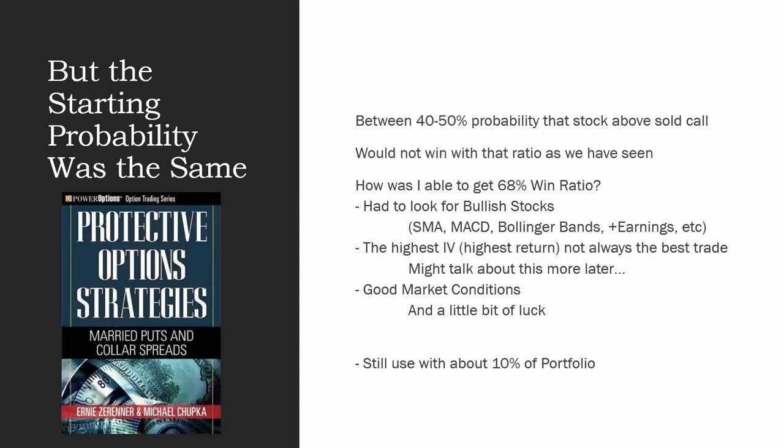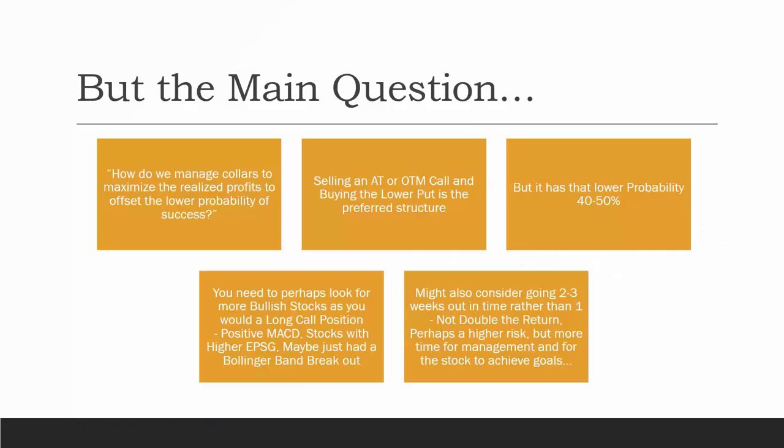Found a stock criteria that was working well for me based on discussions Ernie and I had. And to this day, I still use collars with about 10% of my portfolio. You might be able to find this on Amazon, I'm not sure, but this was the Married Puts and Collar Spreads book that Ernie and I wrote back in 2007, I believe, 2008, that came out there. So it was a little paperback book and it went through some of the different collar structures and some of the approaches that we use for the collar positions. But that doesn't really answer Pavel's question, does it? He says, how do we manage collars to maximize the realized profits to offset the lower probability of success? I will tell you, Pavel, that the preferred structure that I've seen and that I like to use is exactly what you're doing. Selling that close to at-the-money call is possible with only a 50% probability. Sometimes it'll be slightly out of the money. Sometimes it might be slightly in the money, and that's okay, with that lower strike put.